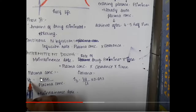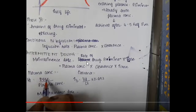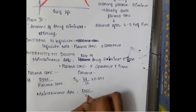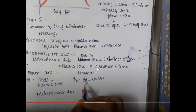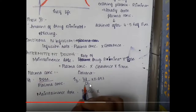Plasma concentration equals dose divided by volume of distribution. Substituting, clearance equals volume of distribution divided by half-life multiplied by 0.693. So clearance equals 0.693 times volume of distribution divided by half-life.